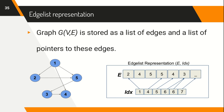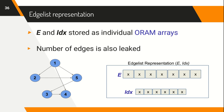The edge list representation consists of two lists, E and IDX. Assuming nodes are labeled 1 to N, the list E stores all the neighbors of node 1, followed by the neighbors of node 2, and so on. The list IDX, basically a list of indices, stores indices into E that act as delimiters for the list of neighbors of each node. Unlike the adjacency matrix representation, the length of list E also reveals the number of edges in the graph, not just the number of nodes.